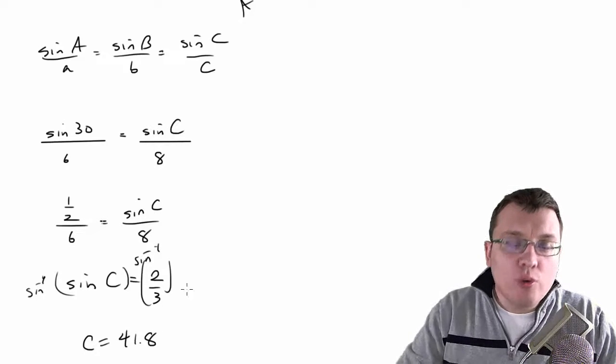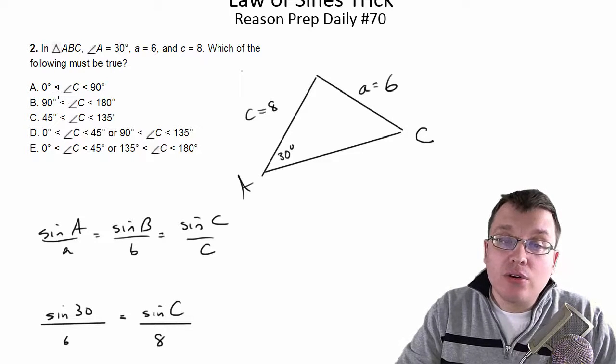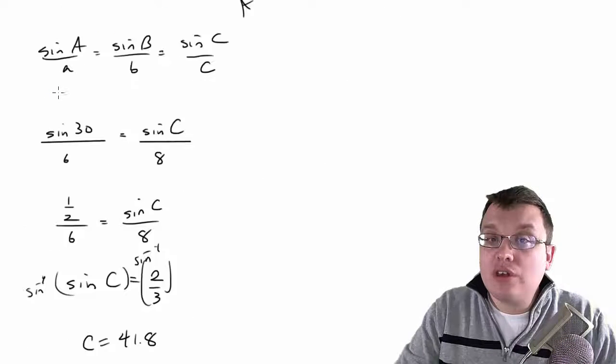So you might say, okay, 41.8 looks like choice A is good. And then you'd get it wrong, unfortunately, because the answer is not just A. So what's the problem here? What is the issue?